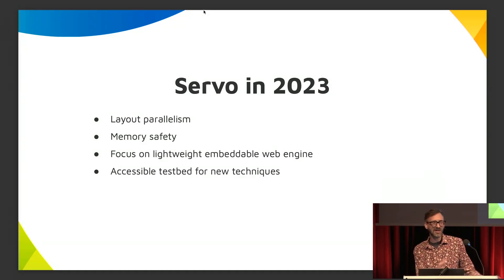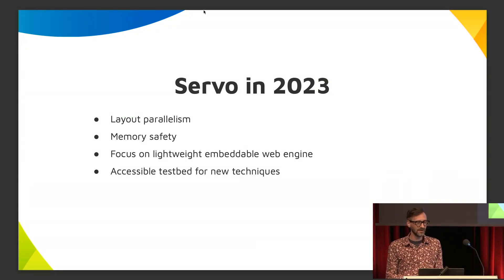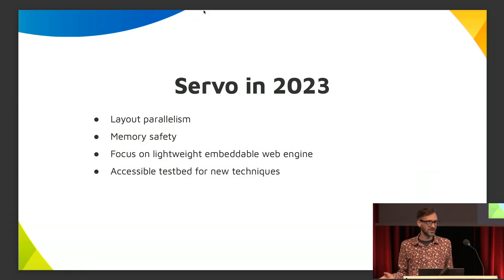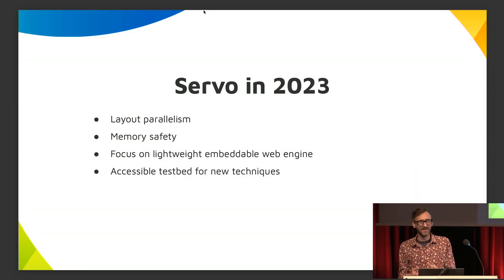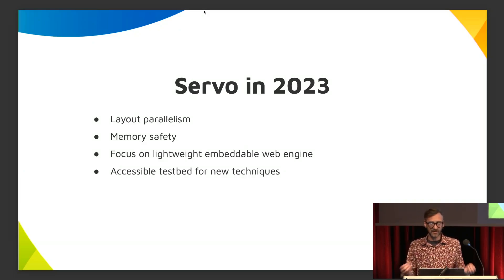So how do we translate those features of Servo into something interesting today? Well, it still has layout parallelism and memory safety — these haven't changed, and they still make it unique. Servo is also in a unique position where it can focus on being a lightweight, embeddable web engine. A lot of people have talked about the pain of Electron — it's a very heavy piece of software, and Servo is not that. So it's in a good position to be this kind of embeddable component.